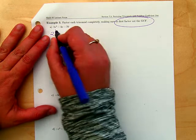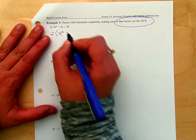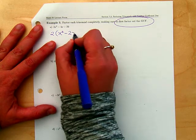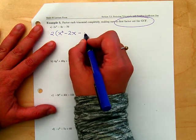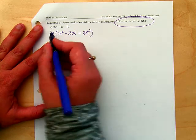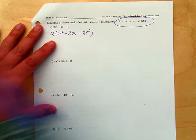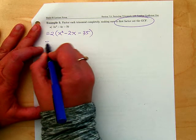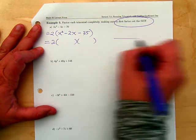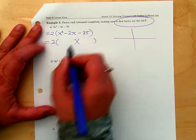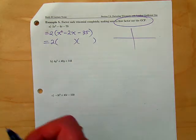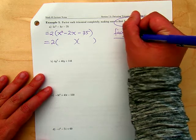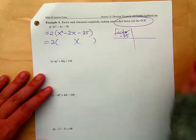Factor out the GCF. Look at all three terms of the trinomial. The GCF is 2. If you divide everything by 2, you're going to get x squared minus 2x minus 35. Now we want to factor what's left. We're ignoring the 2. The 2 just stays along for the ride.